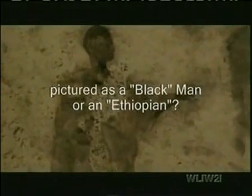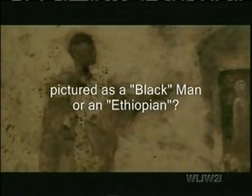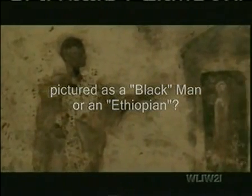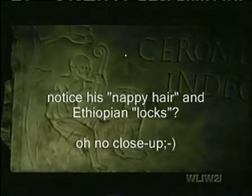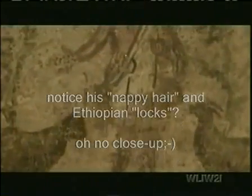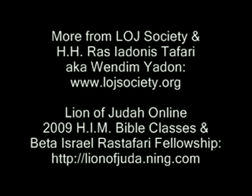Jesus first appears in catacomb paintings dressed in a simple tunic without special distinction, identified only in relation to the miracles he performs — as when he raises Lazarus from the dead, offering the promise of eternal life. Christ was also often shown in symbolic guise, appearing very frequently as the Good Shepherd.